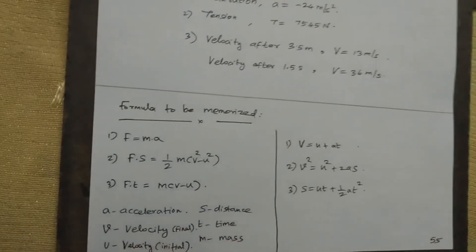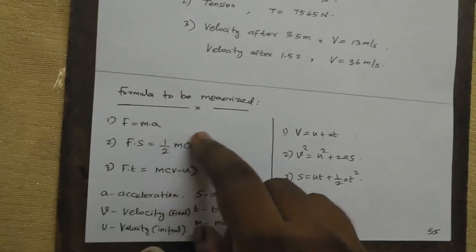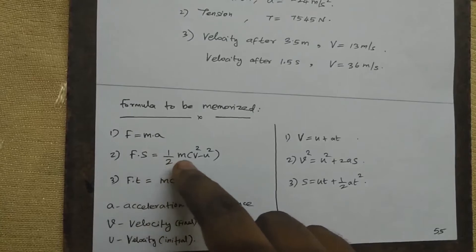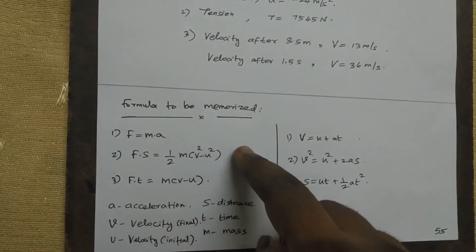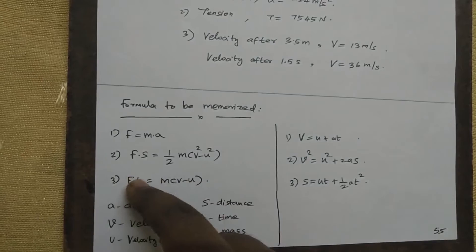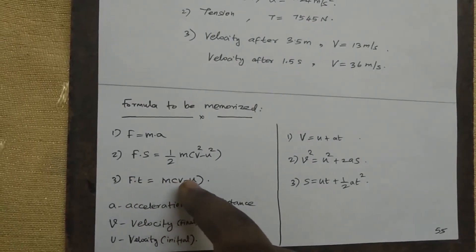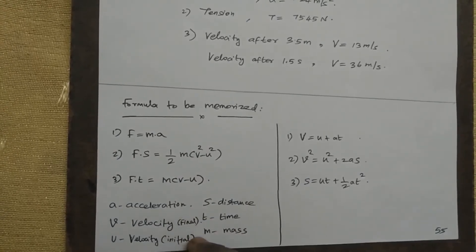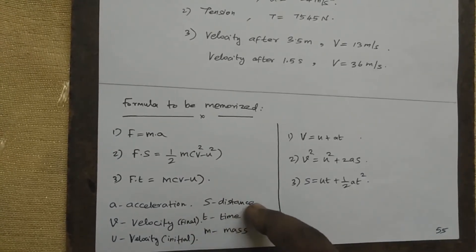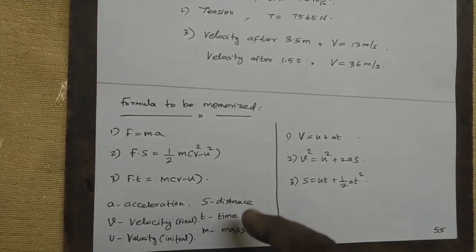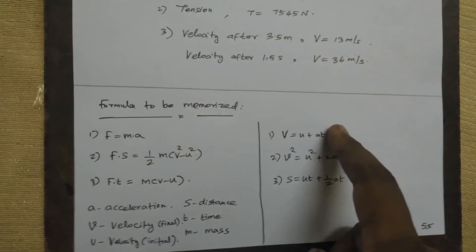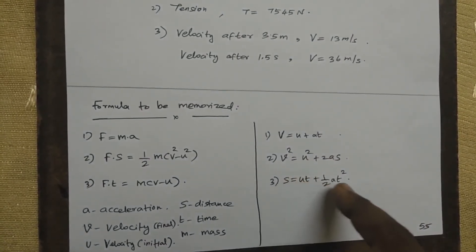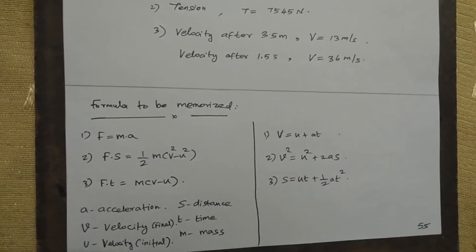Regarding Newton's laws of motion, the formula is F equals M times A. The work-energy principle: F times S equals one-half M times (V² minus U²). Impulse-momentum: F times T equals M times (V minus U). Key variables: A is acceleration, V is final velocity, U is initial velocity, S is distance, T is time, M is mass. The kinematic equations are: V equals U plus AT; V² equals U² plus 2AS; S equals UT plus one-half AT².